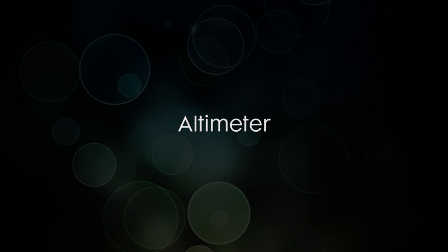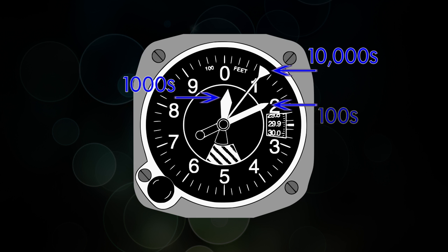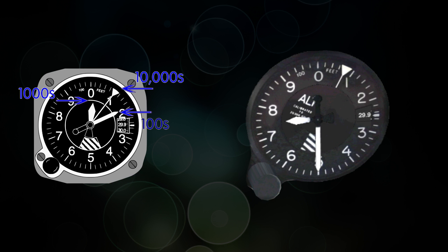We'll first talk about the altimeter. The altimeter kind of resembles a clock in the way that the information is presented. We have a very short needle, and that represents 10,000 feet. We have a medium needle that represents thousands of feet, and then the longest needle is hundreds of feet. And so in this example, it's showing 7,500 feet.